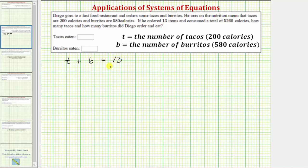We also know that 13 items contained 5,260 calories with each taco having 200 calories and each burrito having 580 calories, which means 200t, the number of calories from the tacos, plus 580b, the number of calories from the burritos, must equal 5,260.